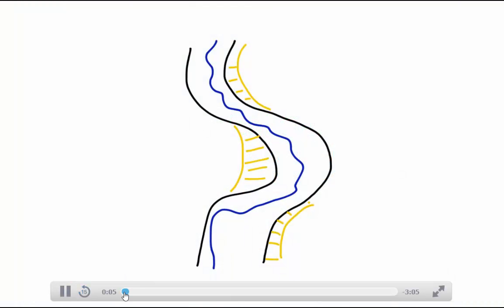An Oxbow Lake is basically this horseshoe type lake which is separated from the adjacent river. And it all forms starting with a meander.